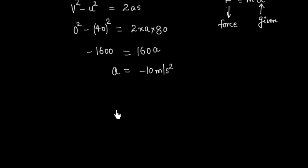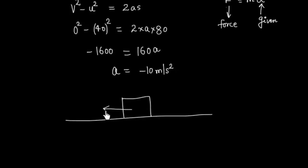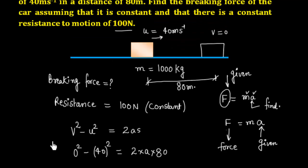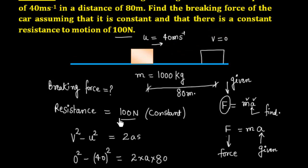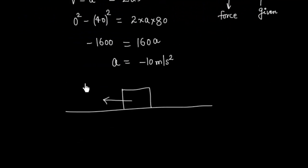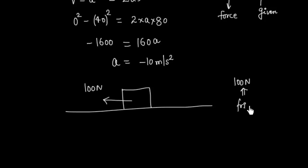Drawing the free body diagram: the car experiences a constant resistance force of 100 N due to friction between the tyres and the floor, and a braking force R applied by the brakes, both acting opposite to the direction of motion.